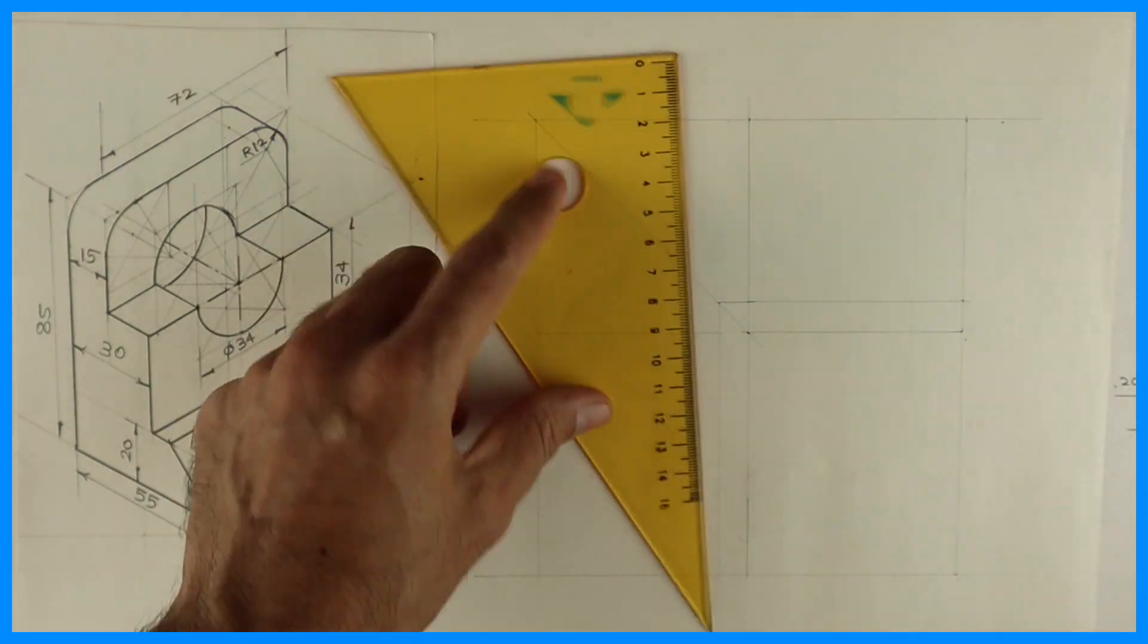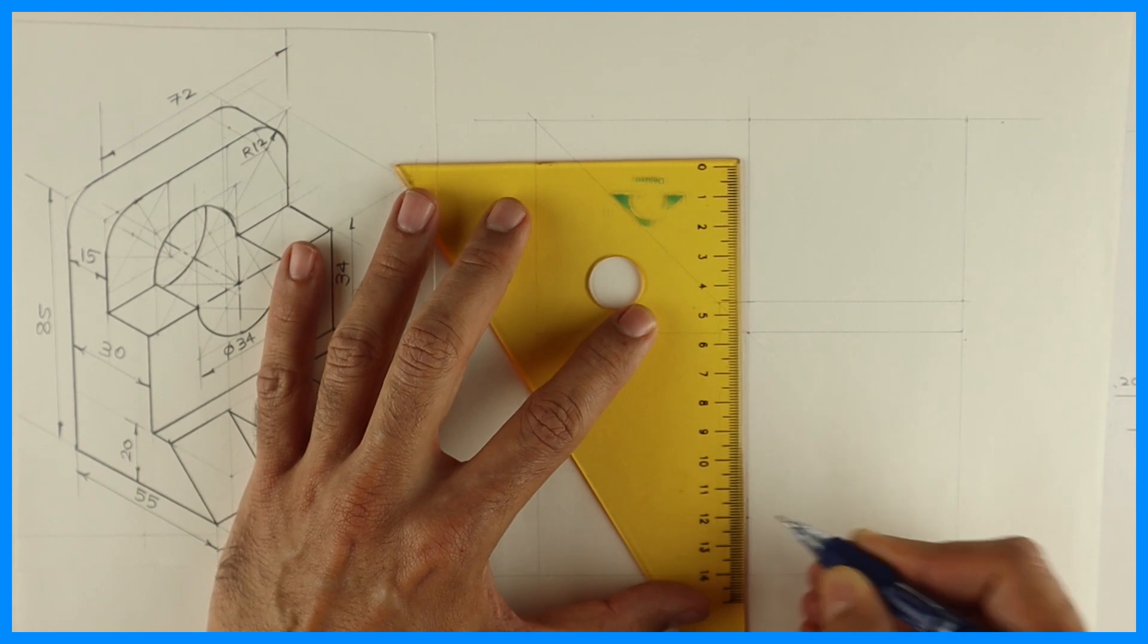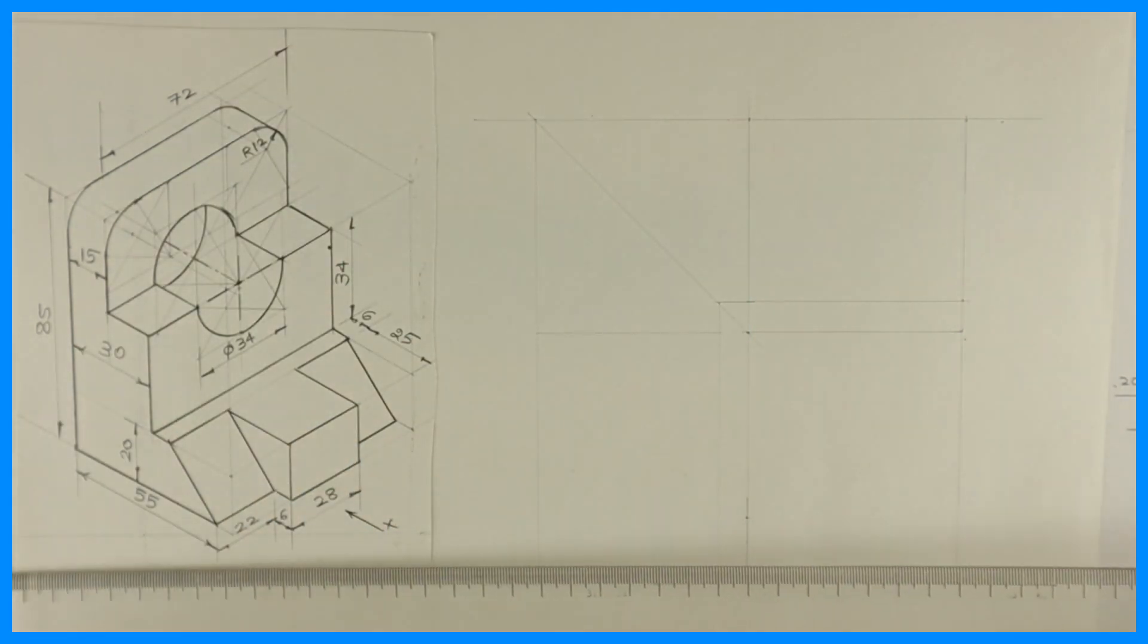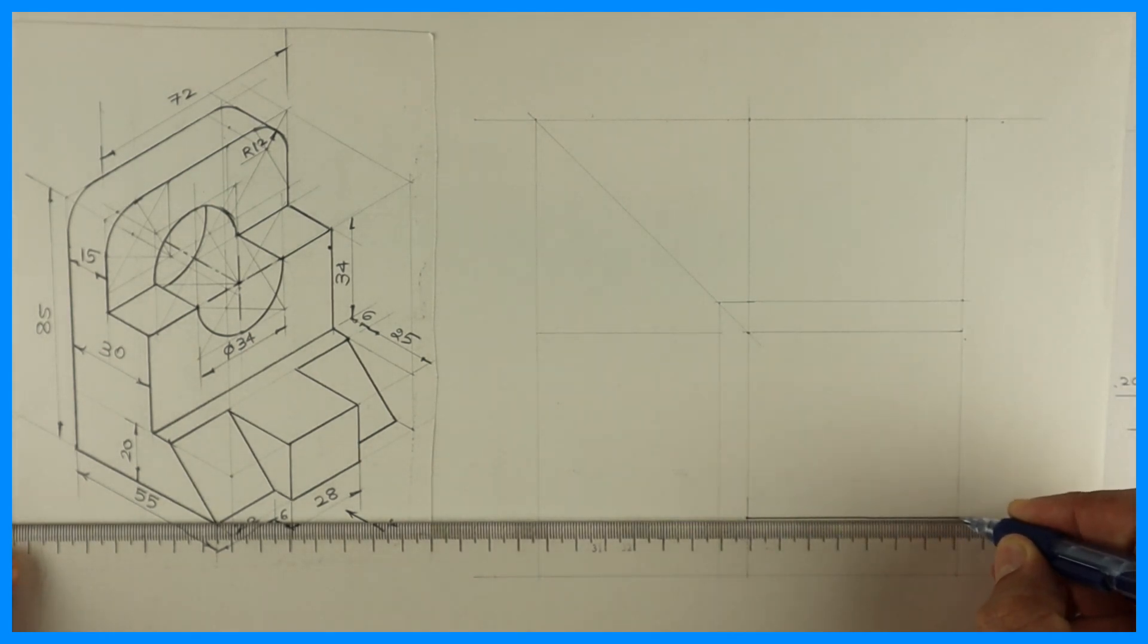See this height 20. Always remember in third quadrant, top view will come above front view and left hand side view will be on left side. Now in this, when you see from the front, you will see height 20.